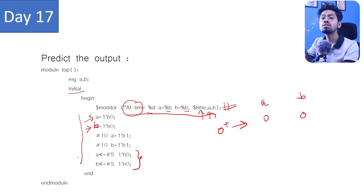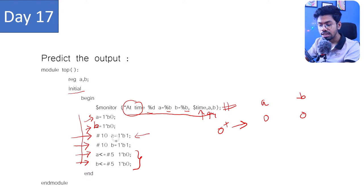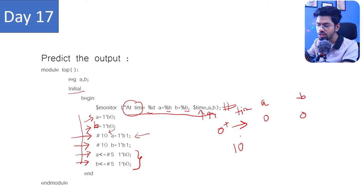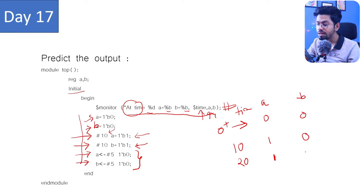This is an initial block — a procedural block. In a procedural block, things run one by one. If it is a blocking statement, execution goes from top to bottom. The first line has a blocking assignment, so execution stops at 10 time units: a equals 1, b equals 0. Then the next blocking statement runs, stopping at 20 time units: a equals 1, b equals 1.